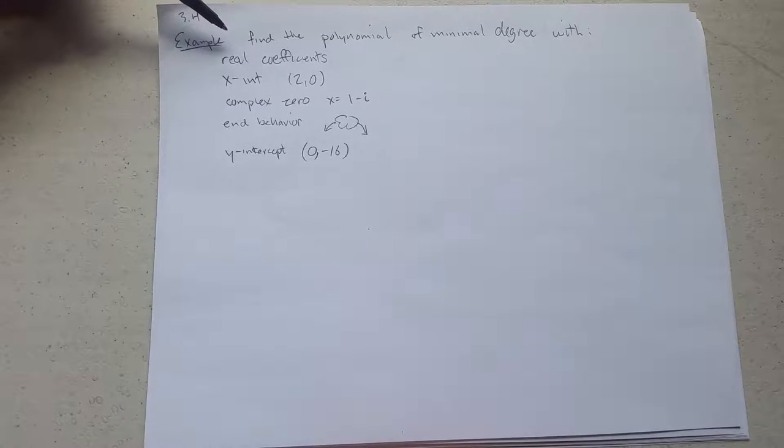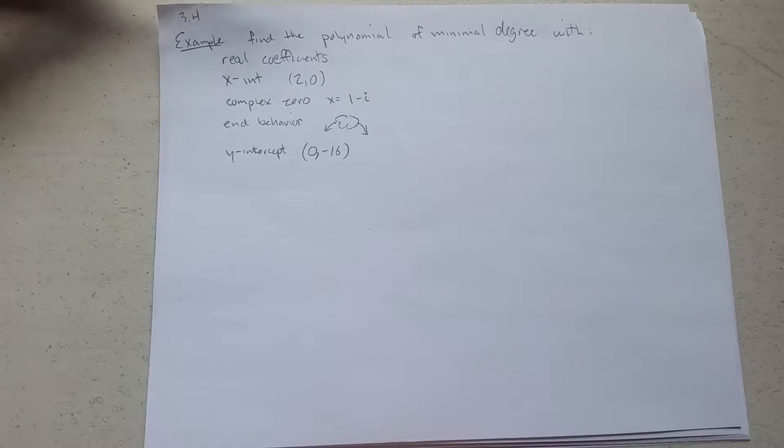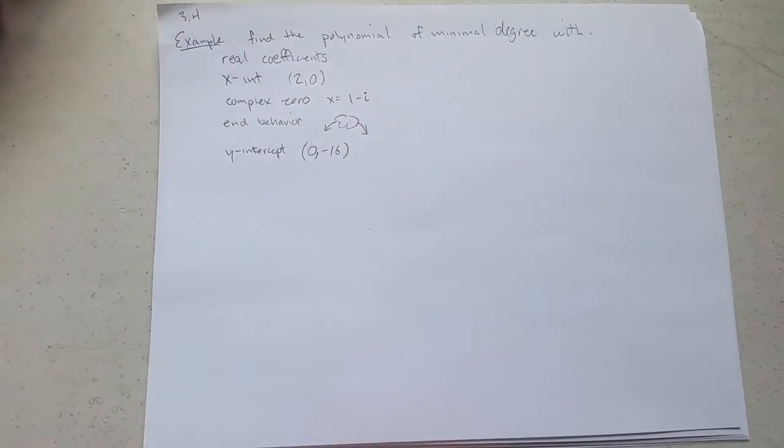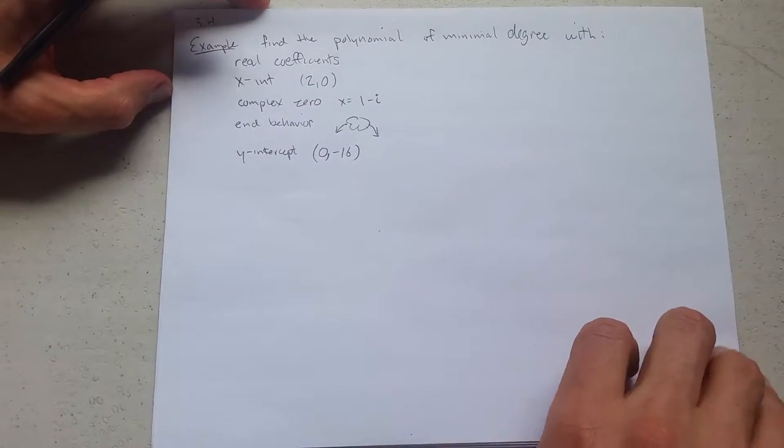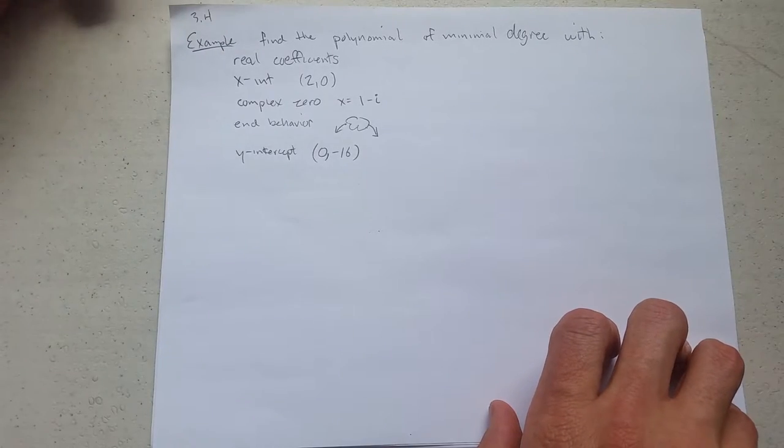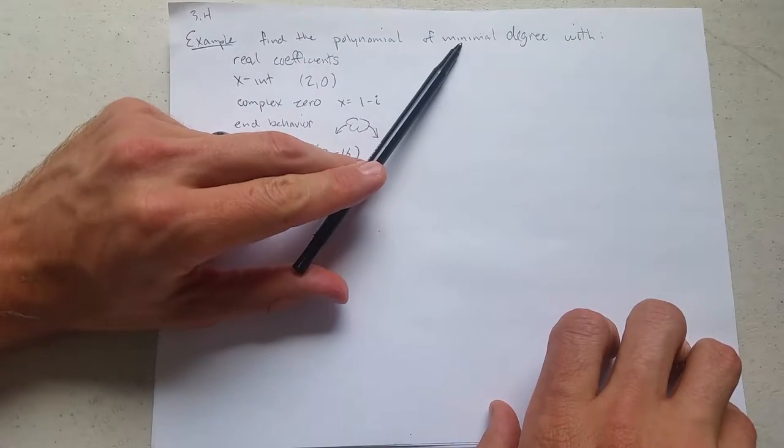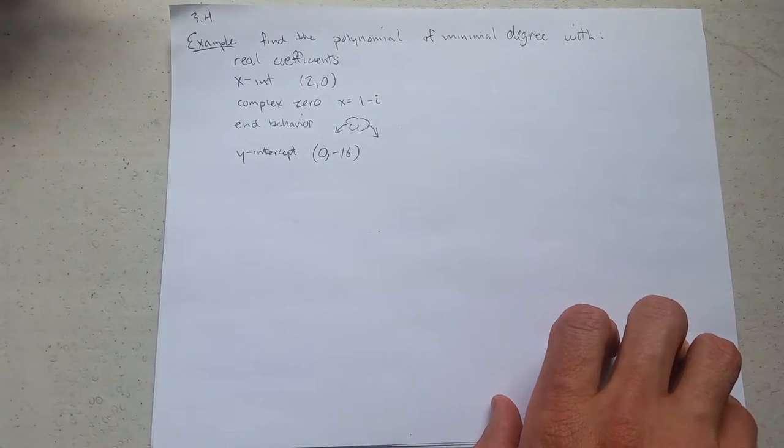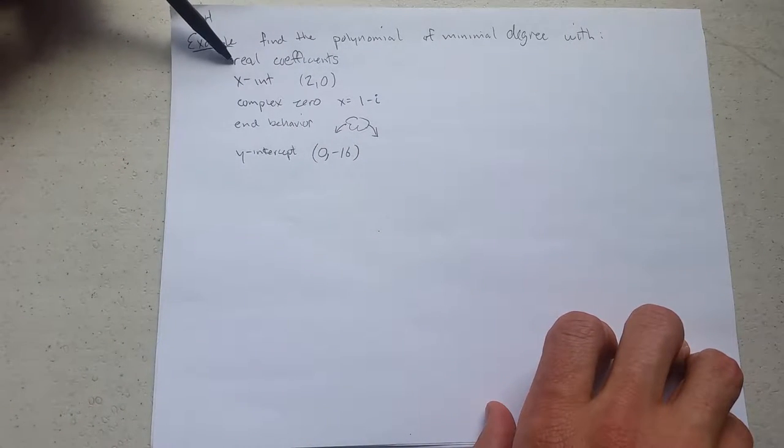Now we're going to write down a polynomial with certain properties. We're going to find the minimal degree, and the minimal degree is useful because we don't want to—if I don't write down minimal degree, there'll be an infinite number of polynomials that could have these properties. So first up, real coefficients.